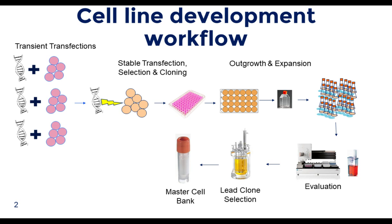Let's start with the basic cell line development workflow. It starts with transient transfections for molecule evaluations — an iterative process. A selected lead molecule is transfected into host cells with a plasmid containing the gene of interest and a selection marker to generate a stable cell line. Cells are placed under selective pressure, then plated to isolate single cell clones. Clones are expanded through vessels of increasing growth area and evaluated to choose the best clones for master cell banking and manufacturing scale production.